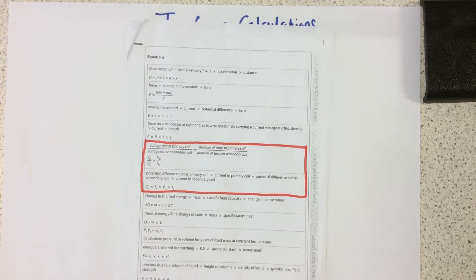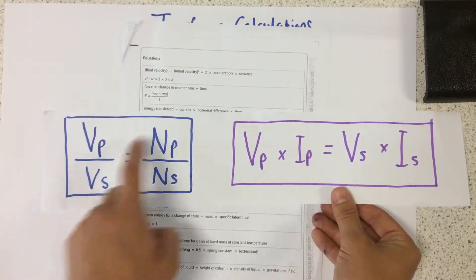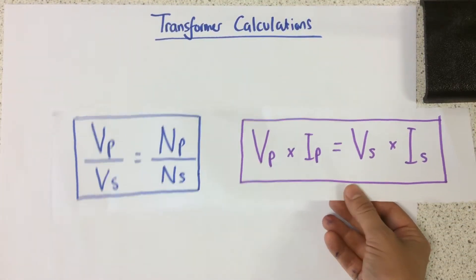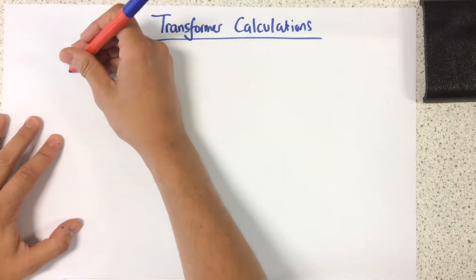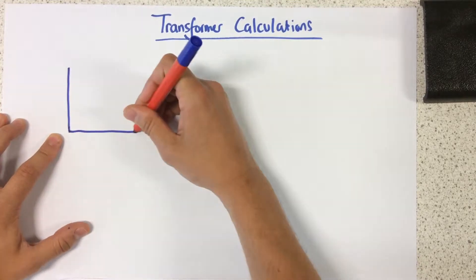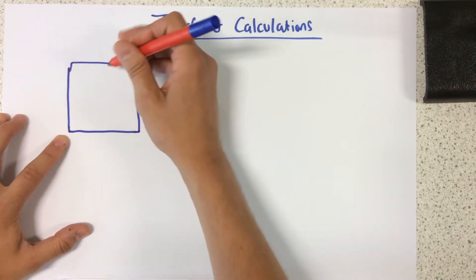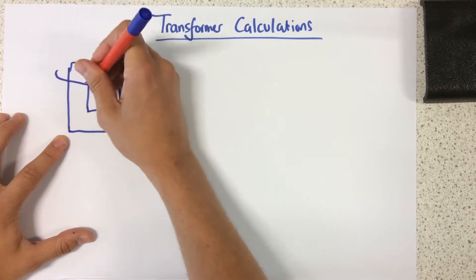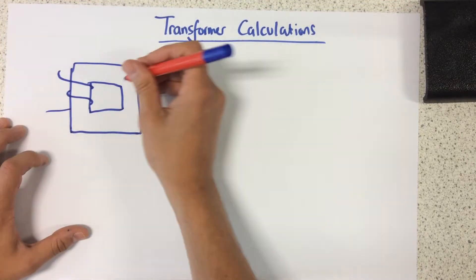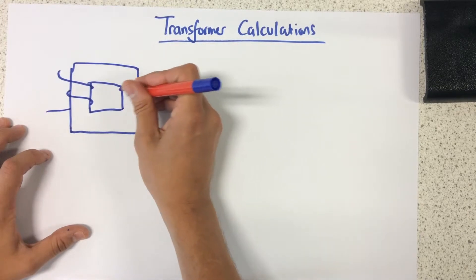Now what I've done is I've written them out bigger for the purposes of this video. We're going to look at each one, one at a time. So if we remember, the whole purpose of a transformer is to change the potential difference. So we're going to take these calculations one at a time in order to try and figure out how to do them.